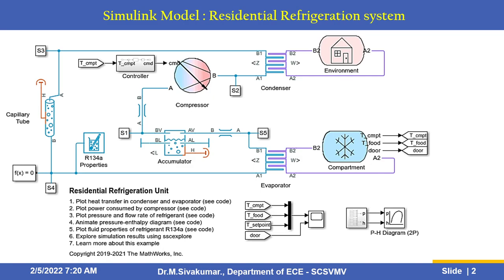Using this example, we can plot heat transfer in the condenser and evaporator, plot power consumed by the compressor, pressure and flow rate of the refrigerant, and fluid properties of R134A. By using the interactive Simscape result explorer, we can see each and every subsystem output.